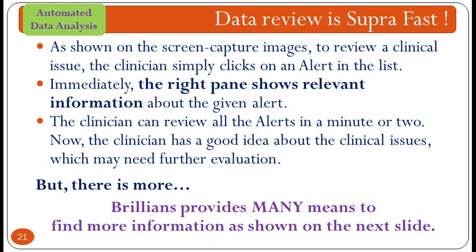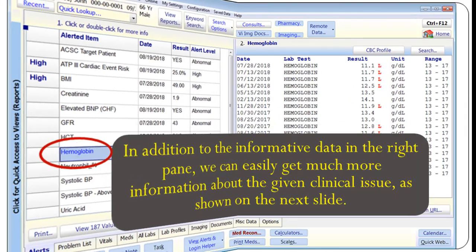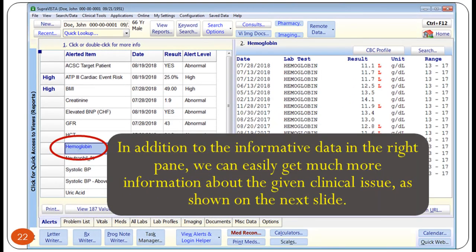In Brilliance, the data review is suprafast. To review a clinical issue, the clinician simply clicks on an alert in the list. Immediately, the right pane shows relevant information about the selected alert. The clinician can review all the alerts in a minute or two. Now the clinician has a good idea about the clinical issues which may need further evaluation. But there is more — Brilliance provides many means to find more information, as shown on the next slide.